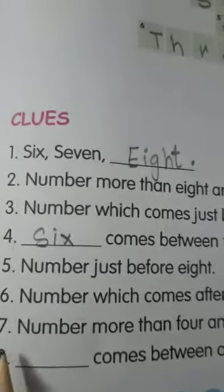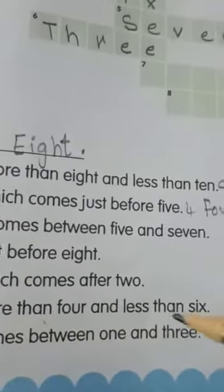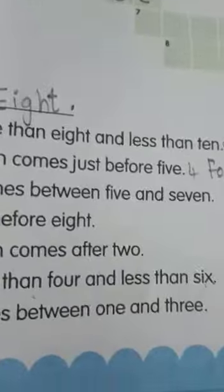The seventh is, number more than 4 and less than 6. More than 4 is 5. And less than 6 is also 5. The spelling of 5 is, F, I, V, E, 5. F, I, V, E, 5.